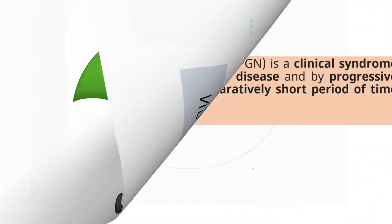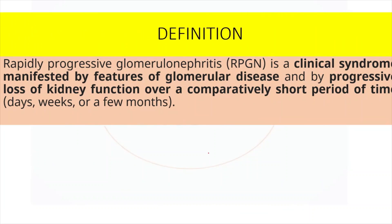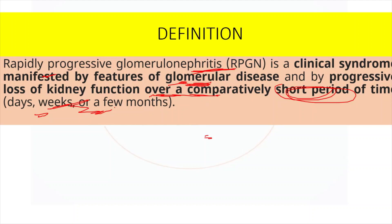Now let's go into the definition of RPGN. RPGN is a clinical syndrome manifested by features of glomerular disease and by progressive loss of kidney function over a short period — days to weeks or a few months. For the undergraduate level, just remember seven days to three months. So the proper definition is: a clinical syndrome manifested by features of glomerular disease with evidence of progressive loss of renal function occurring over a short period of time.